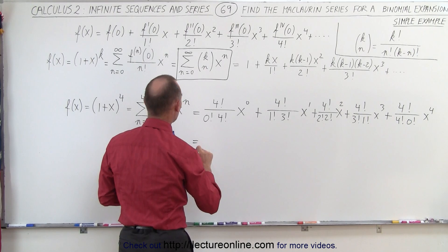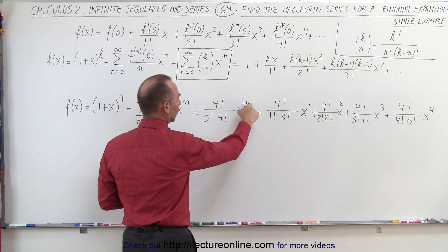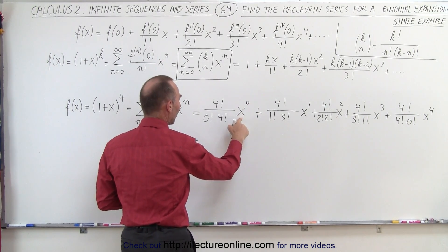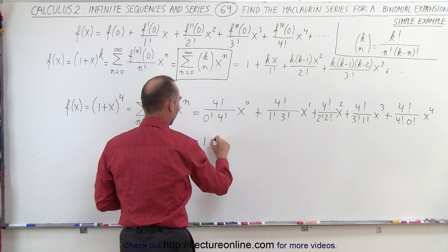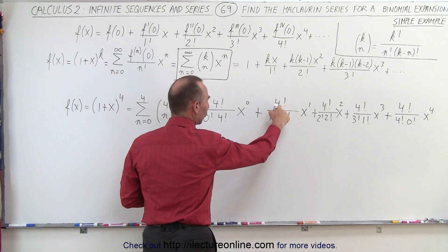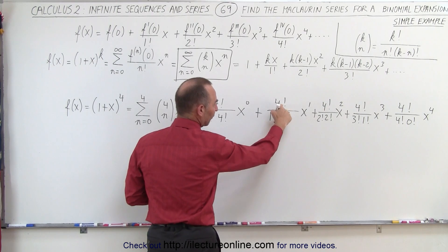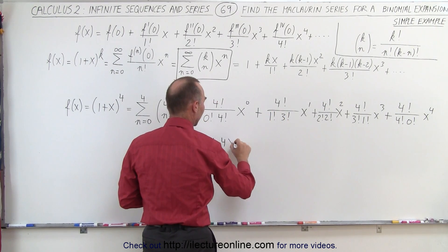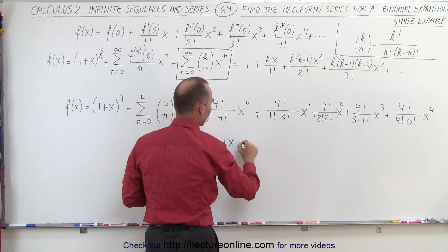This is equal to, so x to the 0 power is equal to 1, so we have 1 times this, which is 1, plus, here we have 4 divided by, 4 factorial divided by 3 factorial, which is 4x to the 1st power, plus.